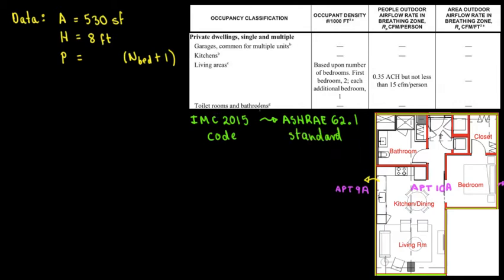So now the number of people is going to be number of bed plus one. So how many bedrooms do we have in here? So we're going to see bedroom, closet, bedroom, kitchen, dining, and living room. So we have one bedroom. So one bedroom plus one would be two. So we're going to have two in here.